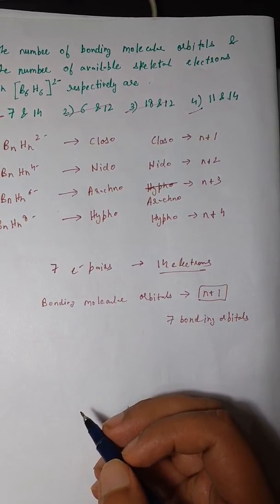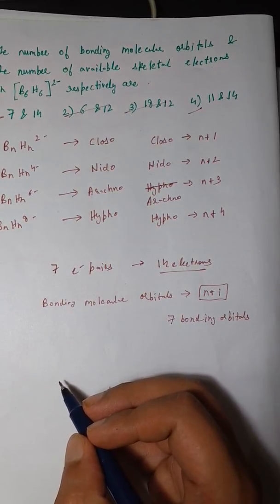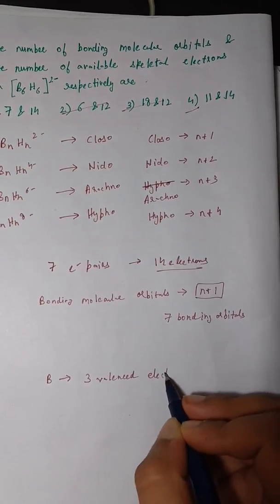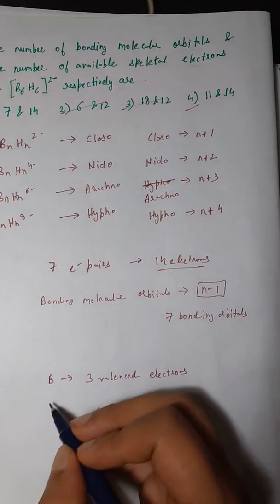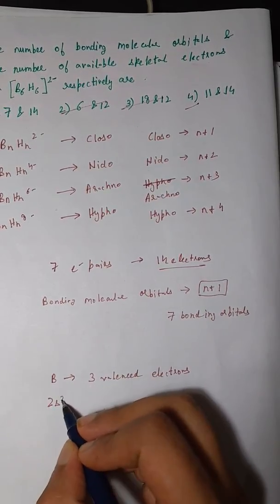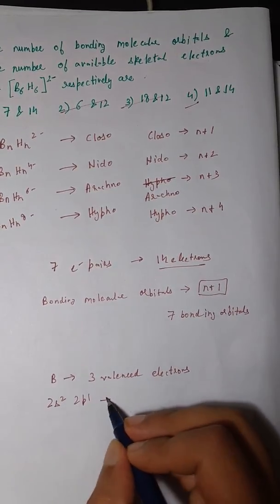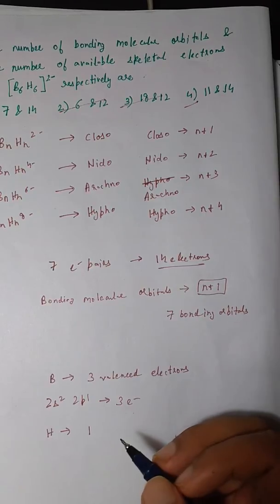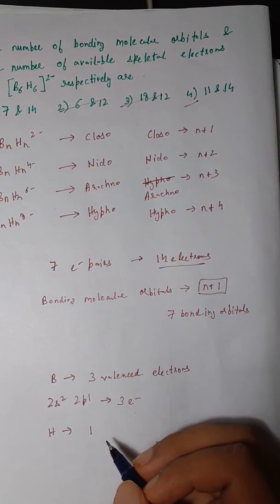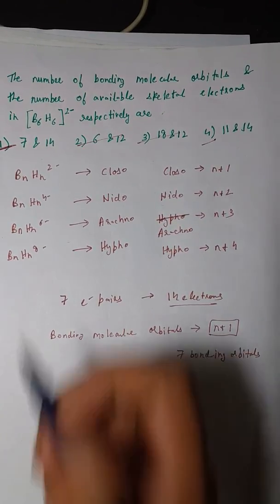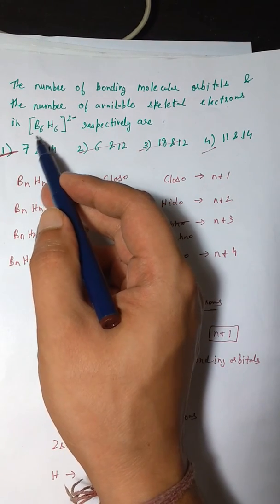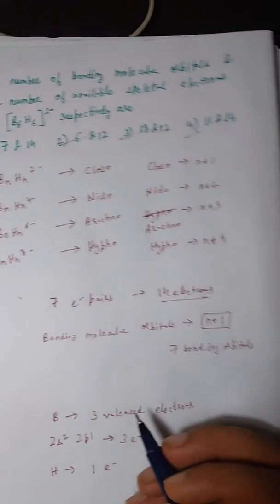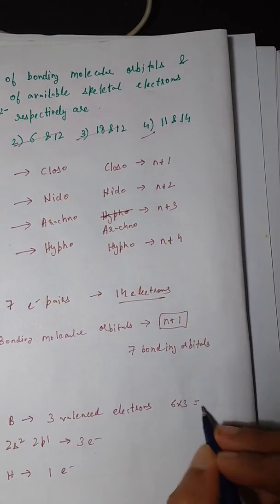To calculate the number of skeletal electron pairs in detail: each boron has three valence electrons (configuration 2s² 2p¹), and each hydrogen contributes one valence electron. For B6H6 2−, there are six borons: 6 × 3 = 18 electrons, and six hydrogens: 6 × 1 = 6 electrons, giving 24 electrons total so far.